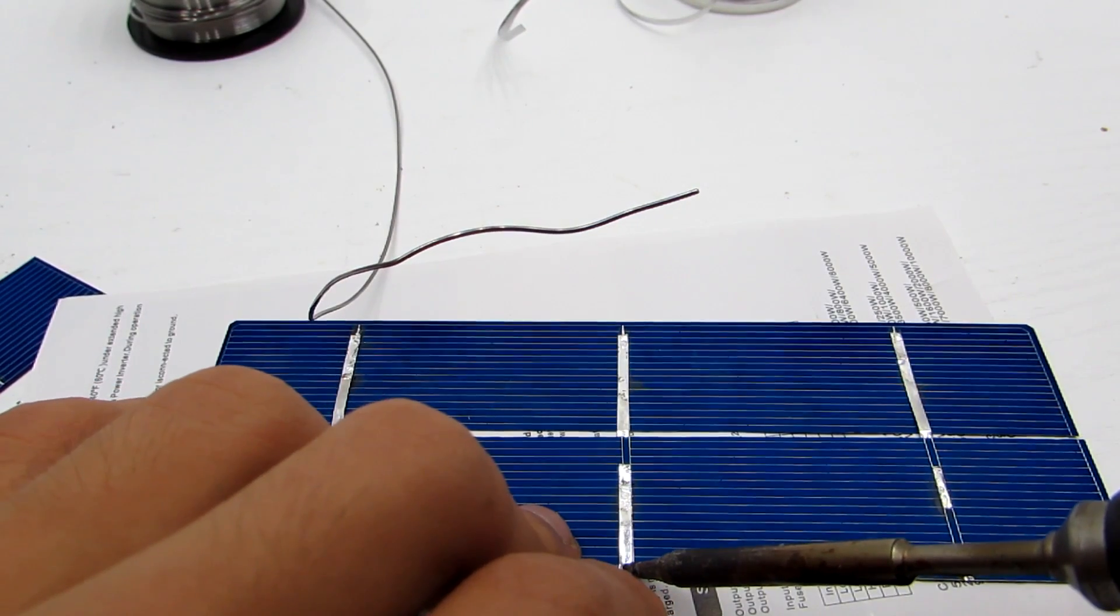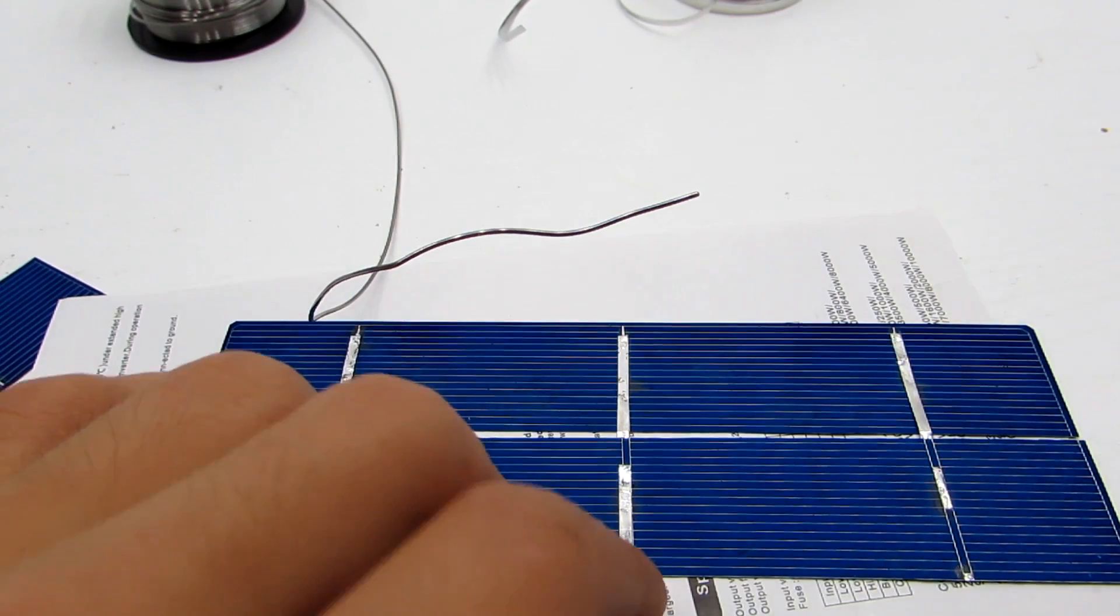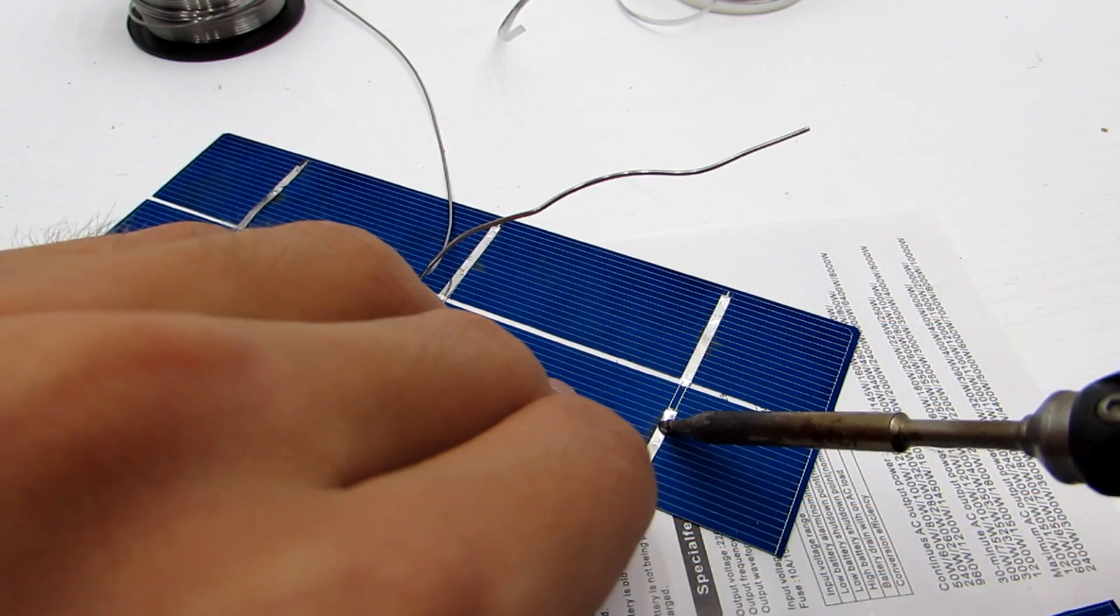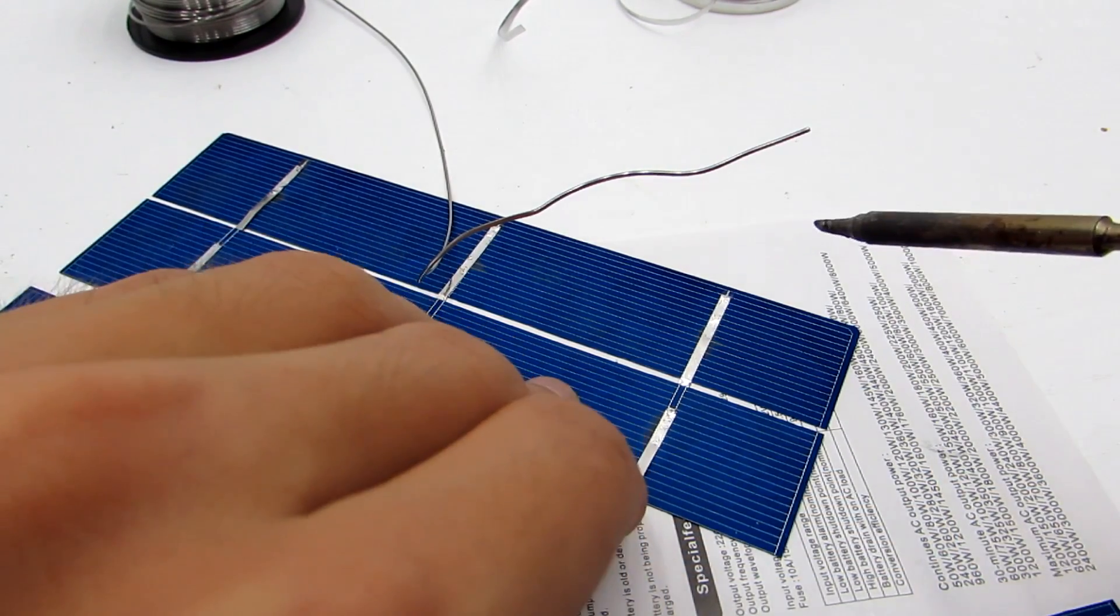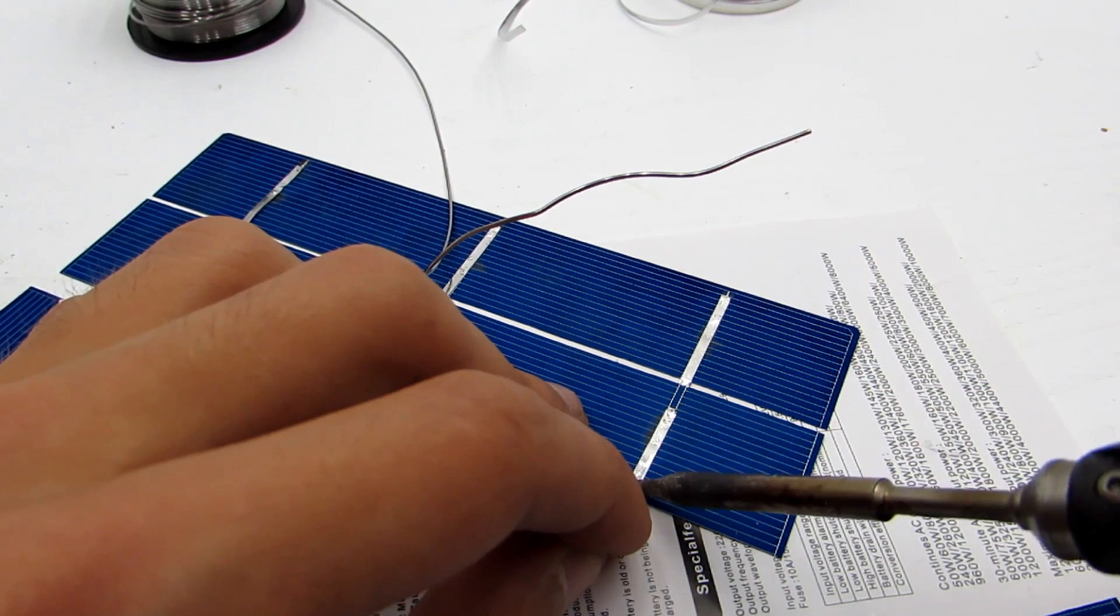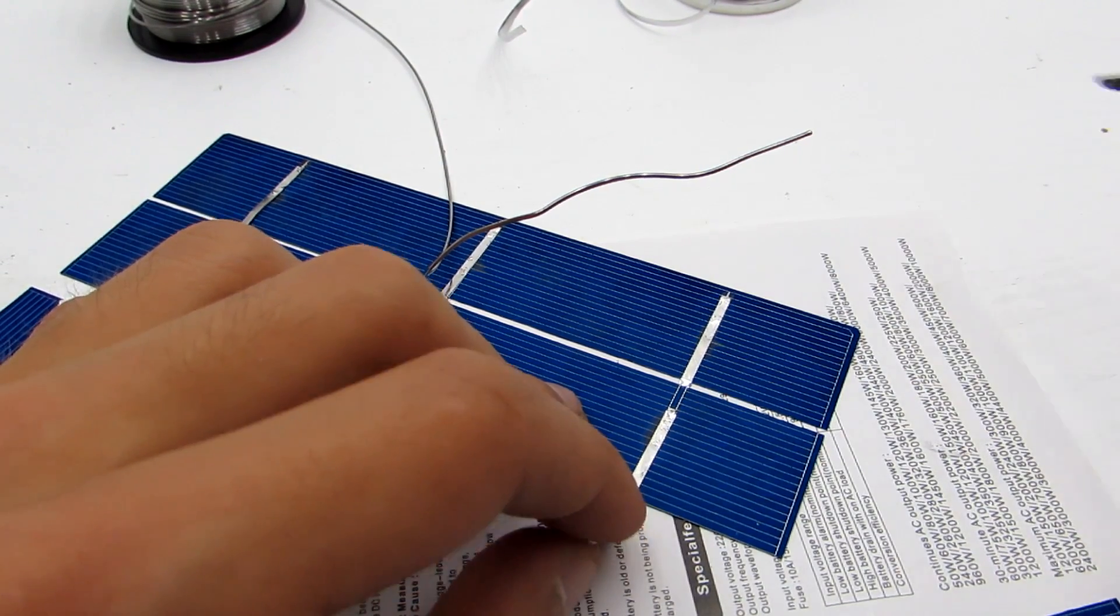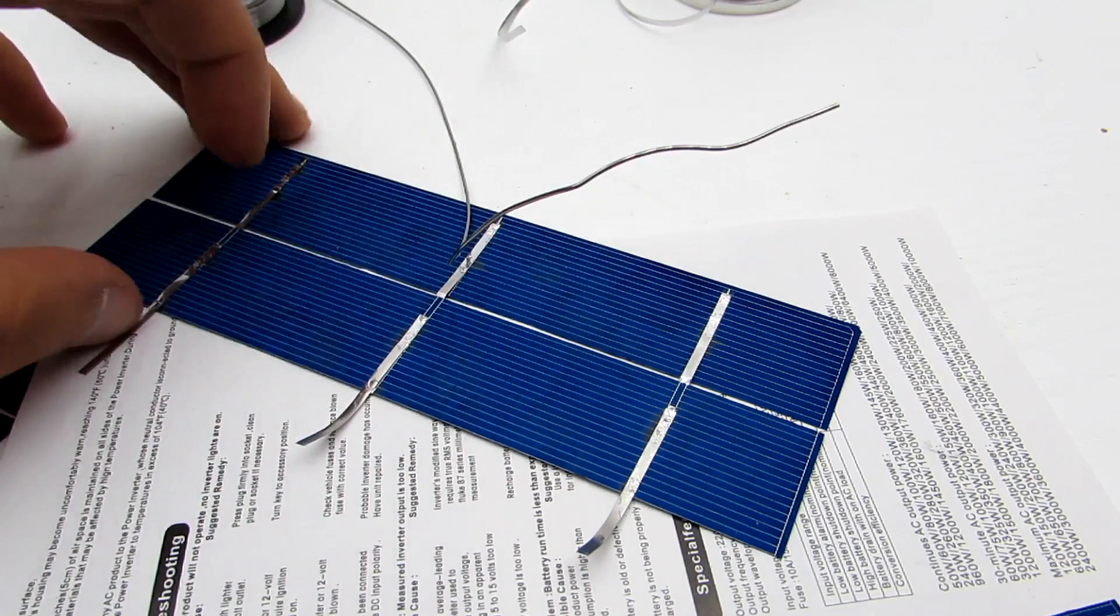Soldering is comfortable with a tip like a wave. The temperature of the soldering iron is about 340 to 350 degrees. First set the connecting bus and then gently move the soldering iron along it. It is not necessary to press. The solder already available on the bus will do the job excellent.